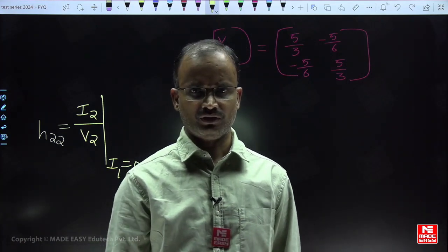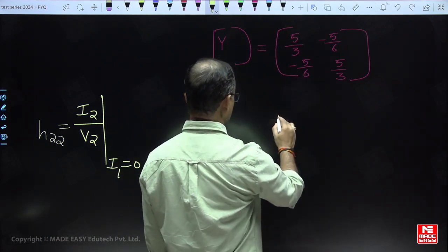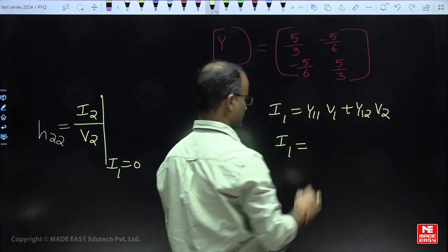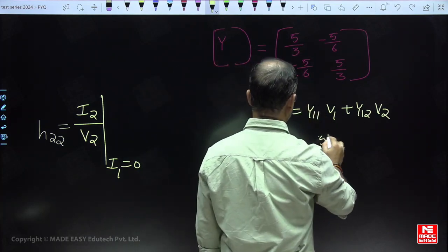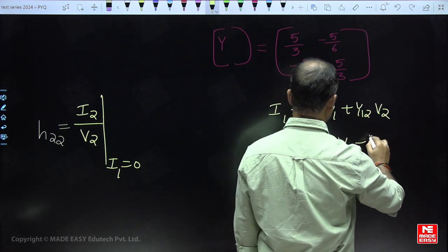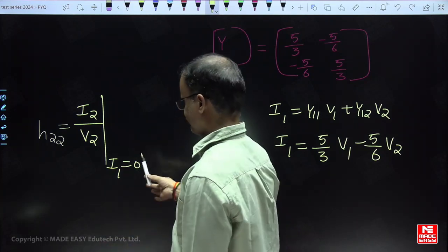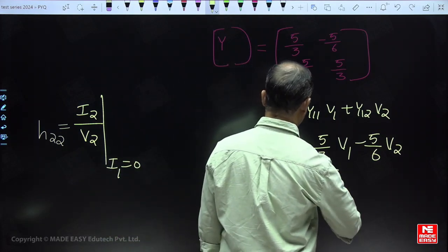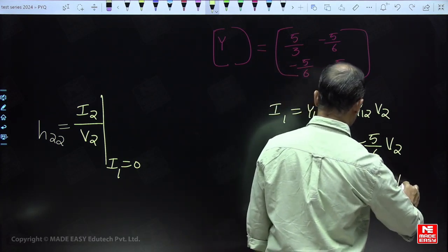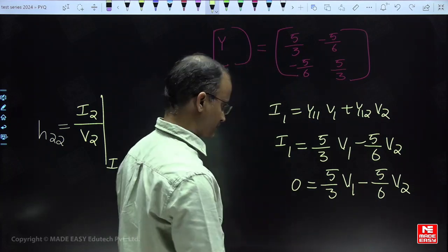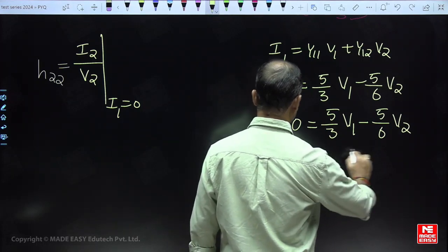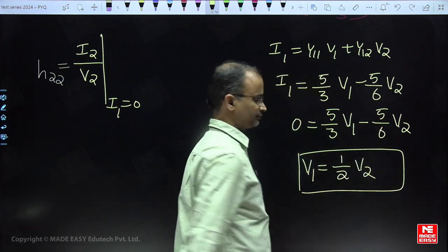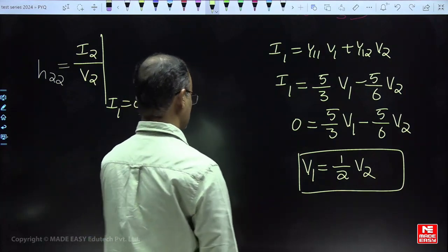Using the standard equations with Y11 = 5/3 and the given Y12 values: to find H22, the condition is I1 = 0. Substituting I1 = 0 into the first standard equation and rearranging, we can express V1 in terms of V2. We get the relation V1 = (1/2)V2.